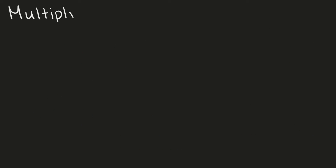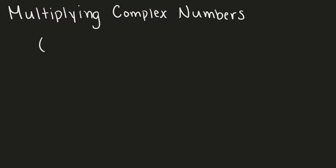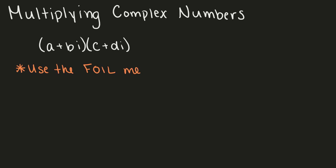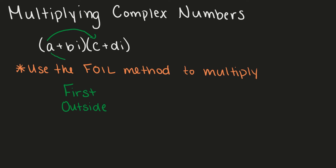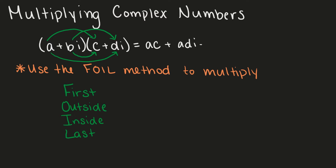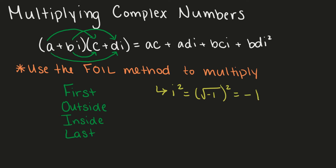Now let's look at multiplying complex numbers. To multiply complex numbers, we use the FOIL method. FOIL stands for first, outside, inside, last — which corresponds to which terms we are multiplying. So if we have a plus bi times c plus di, we multiply the first terms (a times c), then the outside terms (a times di), the inside terms (bi times c), and the last terms (bi times di). This becomes ac plus adi plus bci plus bdi squared. Keep in mind, i squared is equal to negative 1.